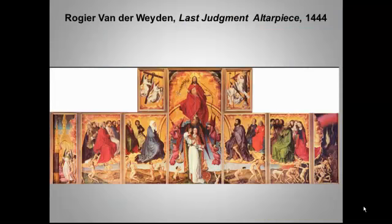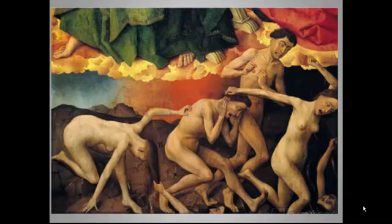This altarpiece, which is also by Roger van der Weyden, was commissioned for a hospital that specialized in treating skin maladies. You'll note that the artist has used hierarchy of scale to indicate relative importance. There are still medieval elements in Northern Renaissance painting. Here we see some of the damned writhing in pain and terror. Note the superb color of the oil painting.